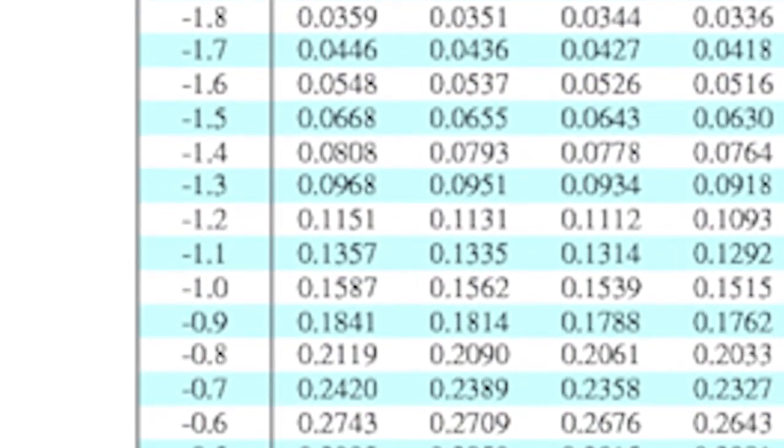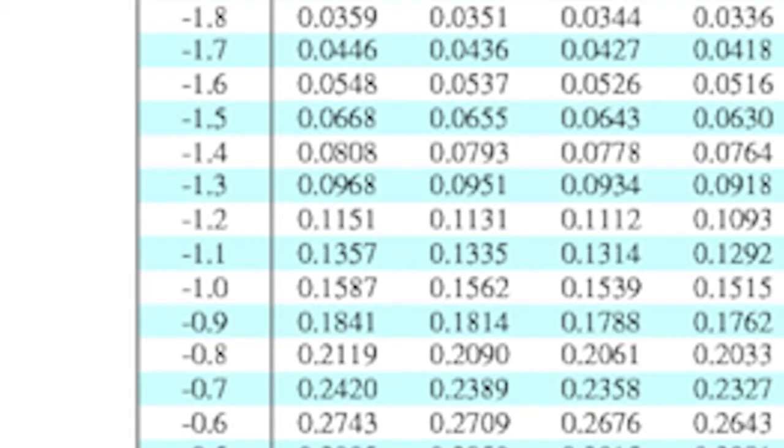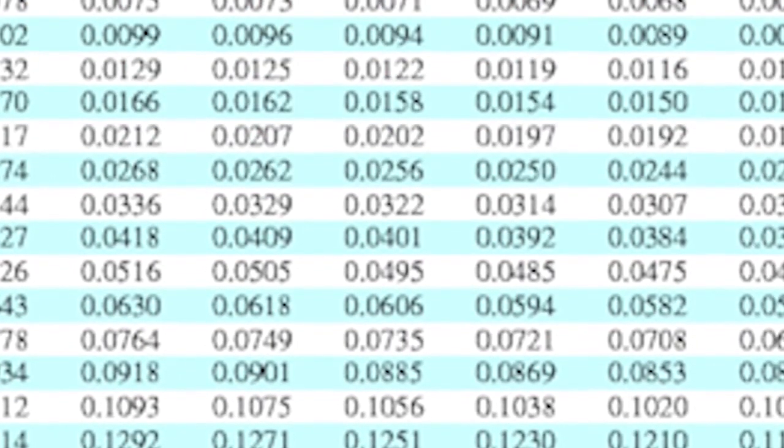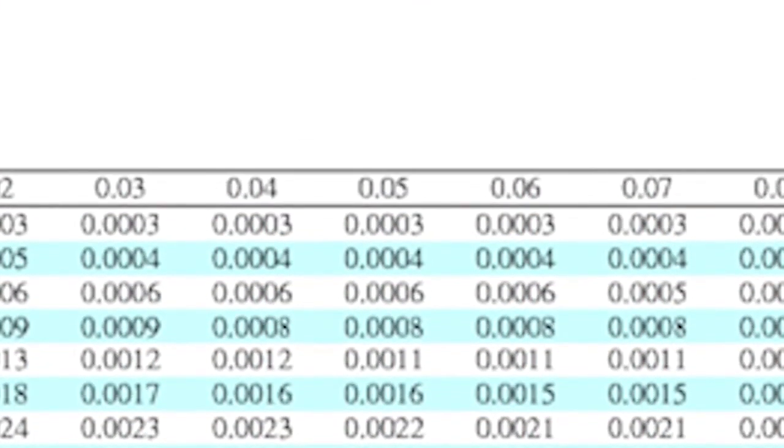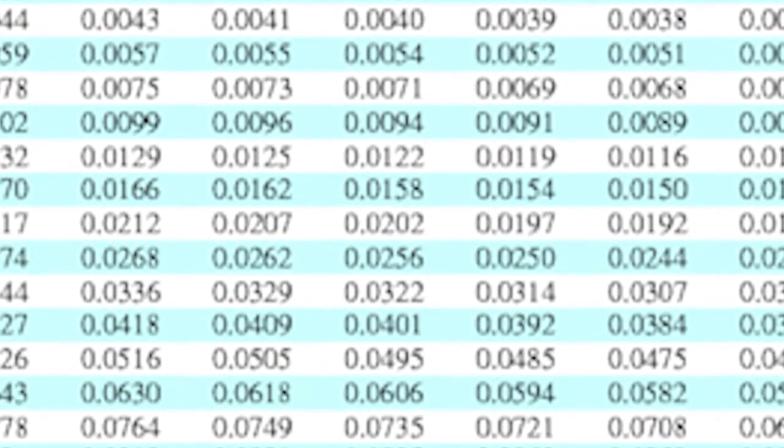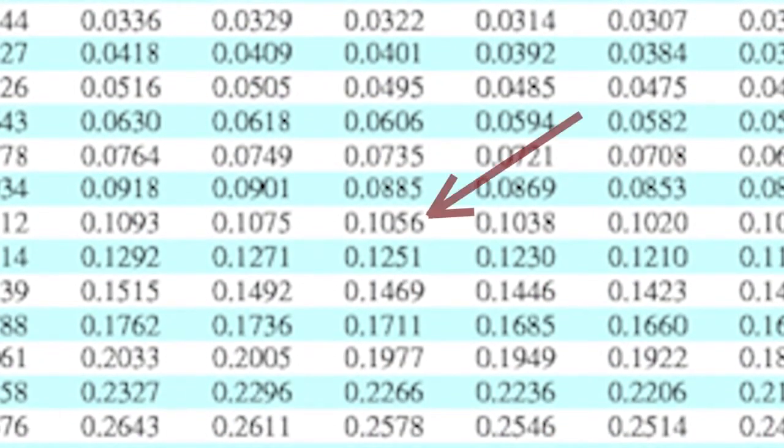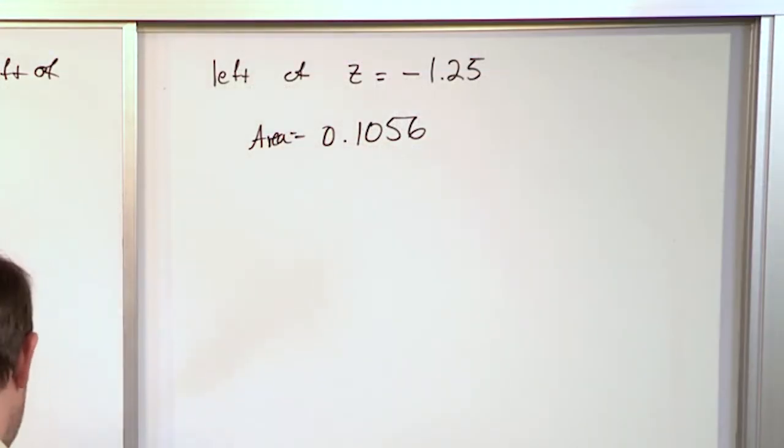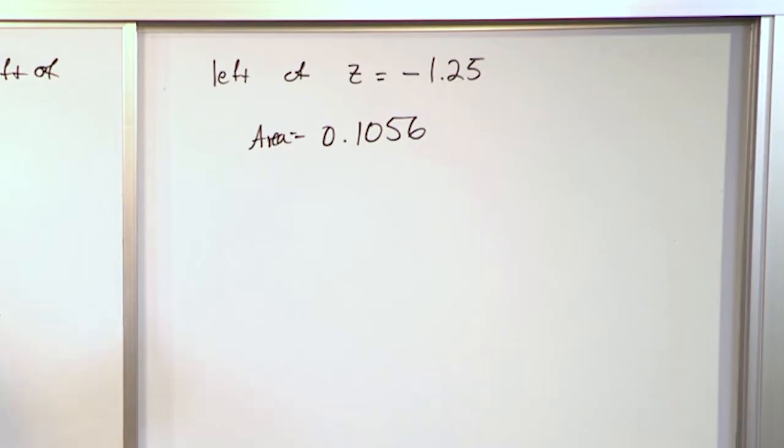So we'll find negative 1.2. It jumps from 1.2 to 1.3. So there is no exact value on the left-hand side. So we need to obviously use that row, negative 1.2, and scroll over until we get to the 0.05 column. So that's negative 1.25. So the answer we get is 0.1056. So the area is equal to 0.1056.